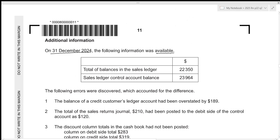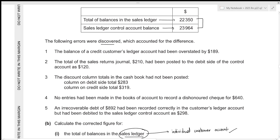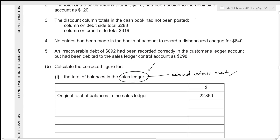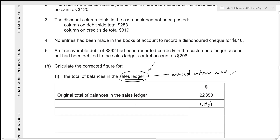On 31st December 2024, the sales ledger balance is 22,350 and the control account balance is 23,964. Since these differ, there are errors to correct. The first error: the balance of a credit customer's ledger account had been overstated by 189. This is an error in the customer's account, so we correct it in the sales ledger by removing 189 — we subtract 189 from the sales ledger.